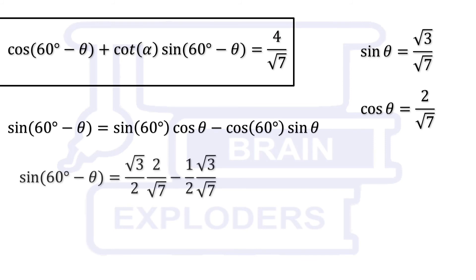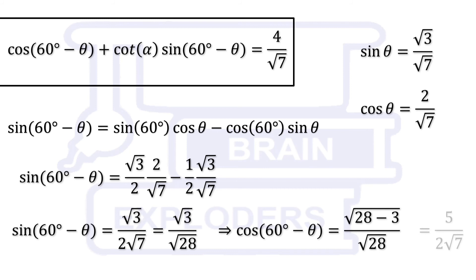Put the values of sin theta and cos theta here. Sin(60° - theta) is equal to root 3 over 2 root 7 and cos(60° - theta) is 5 over 2 root 7.